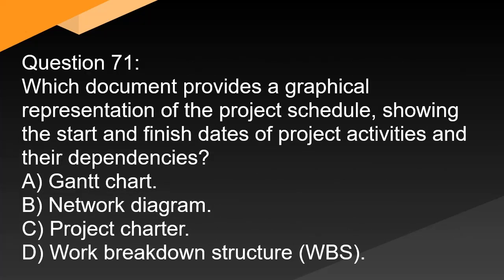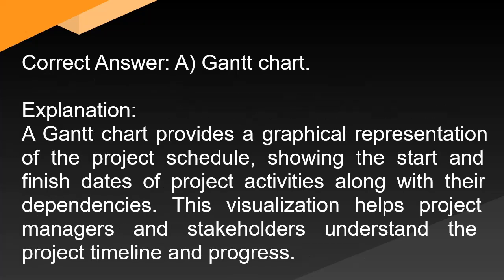Question 71: Which document provides a graphical representation of the project schedule, showing the start and finish dates of project activities and their dependencies? A. Gantt chart. B. Network diagram. C. Project charter. D. Work breakdown structure (WBS). Correct answer: A. Gantt chart. Explanation: A Gantt chart provides a graphical representation of the project schedule, showing the start and finish dates of project activities along with their dependencies. This visualization helps project managers and stakeholders understand the project timeline and progress.